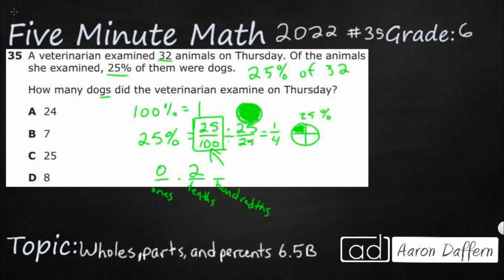So 25 hundredths is going to be 0.25. So that's this percent. You can write 25% as 25 over 100. You can also write it as 0.25. Either of those work, because they both say 25 hundredths, and we know 100% is the whole thing.